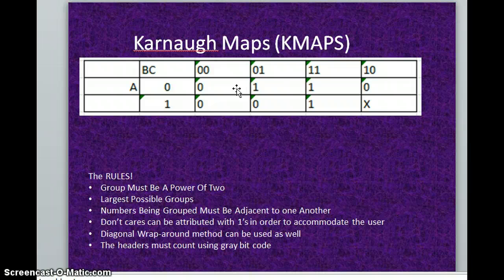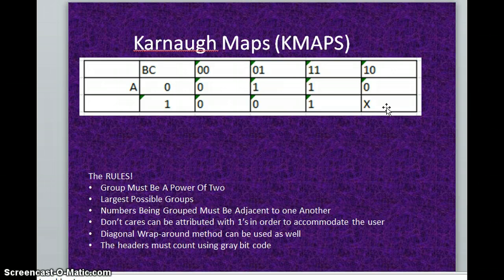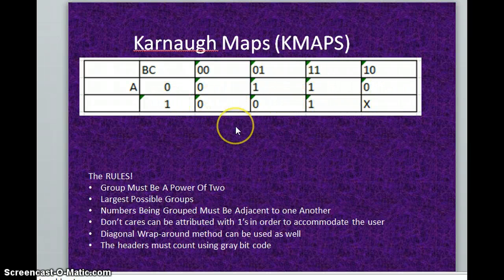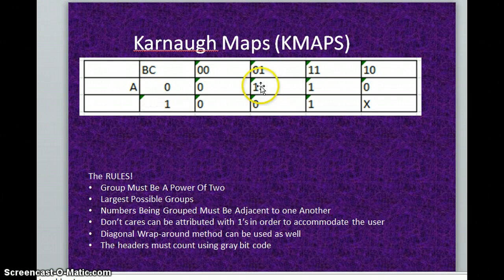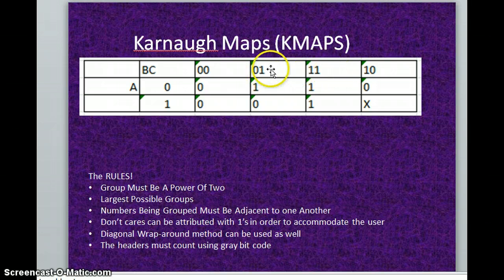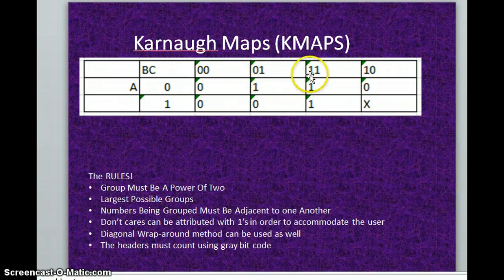Another rule is that you have to make the largest group possible. If you had all ones, you'd want to group the entire thing rather than doing two here, two here, and two there, because the derivation of the equation is much, much easier with a larger group. How we derive the equation is by what stays constant in a group. For instance, if A remains constant throughout a group, A goes into the equation. If B changes within that group, B is kicked out. If C doesn't change, C stays in — so you'd get something like A-not and C, for example.